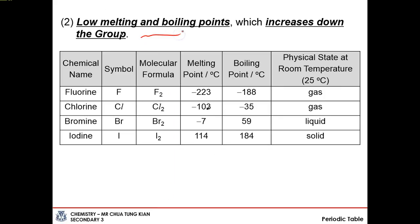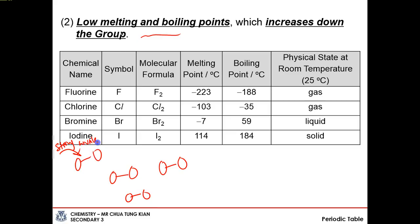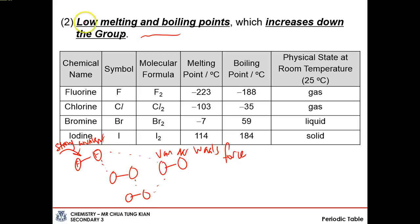Halogens have low melting and boiling points because they are non-metals with a simple molecular structure. The predominant interaction between molecules is weak Van der Waals forces. These forces are weak, so they are easily broken by a small amount of energy, resulting in low melting and boiling points. As you go down the group, the strength of the Van der Waals forces increases because the number of electrons increases. More electrons means stronger Van der Waals forces, requiring more energy to overcome them, so melting and boiling points increase down the group.